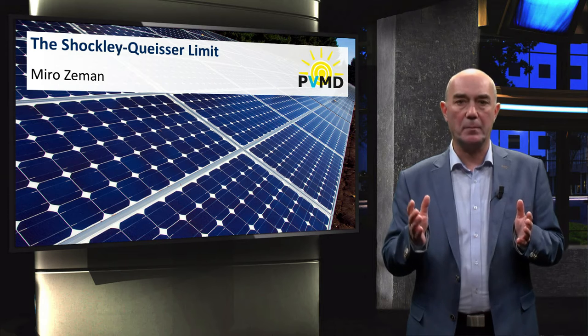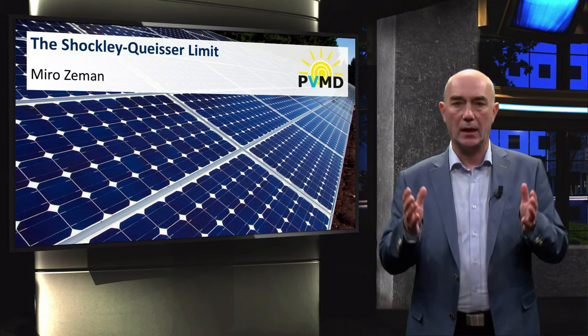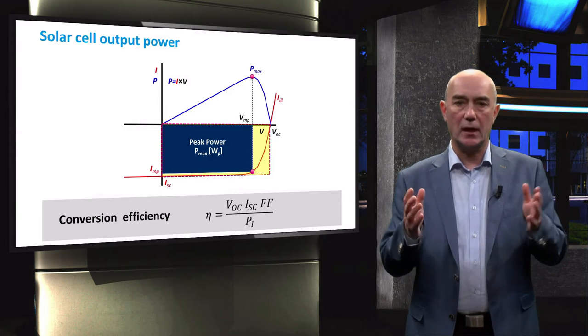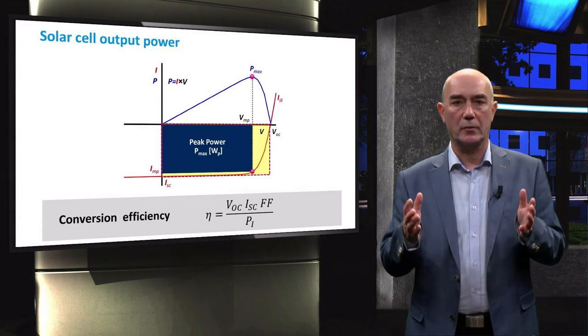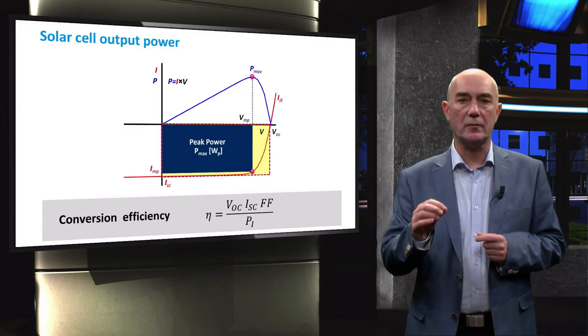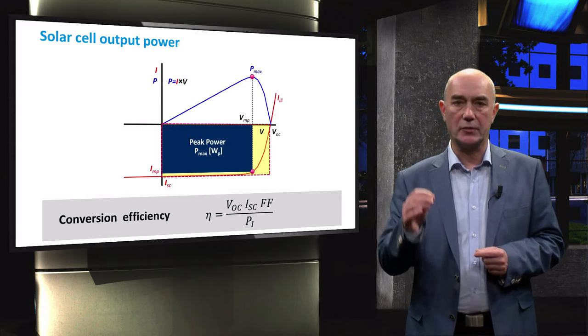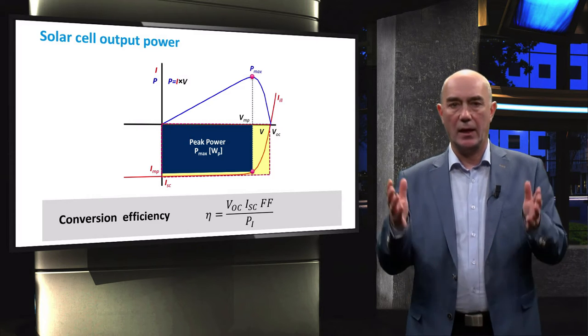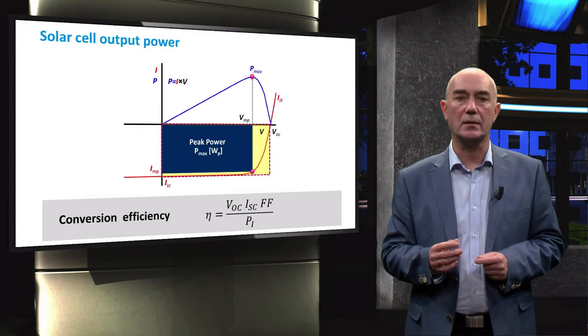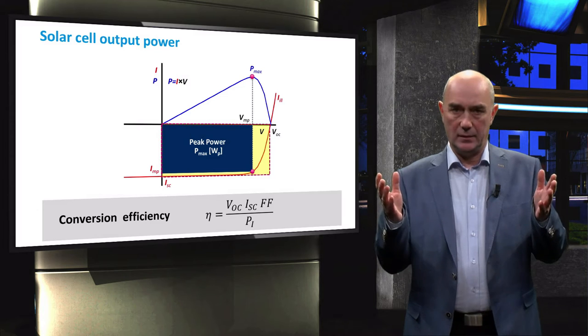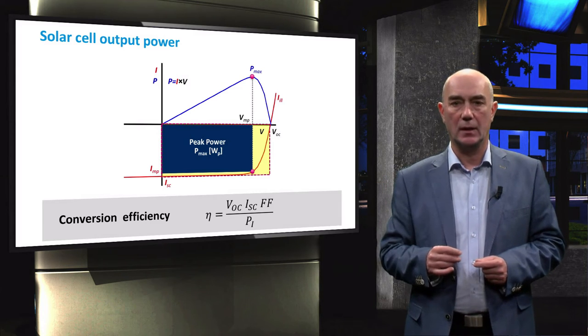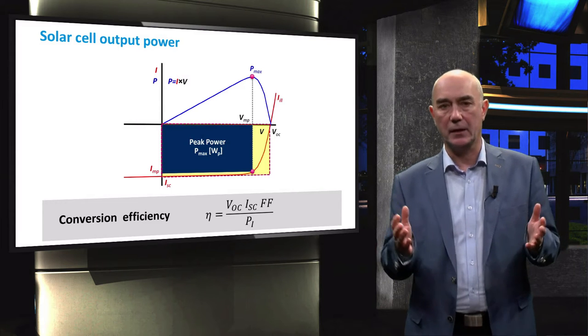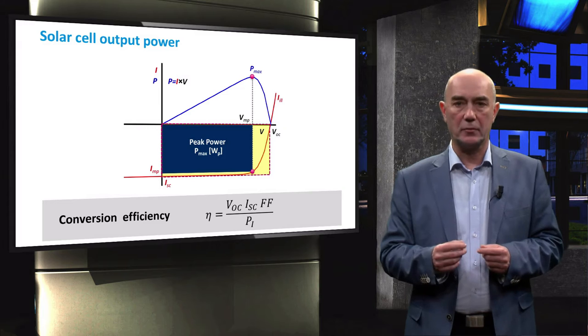Knowing the Shockley-Queisser limit will help us to understand which material bandgaps are good candidates for designing high-efficiency solar cells. Here you see our familiar current voltage and power voltage curves for a solar cell. You should know by now that the efficiency of a solar cell can be calculated as the product of the open circuit voltage, the short circuit current and the fill factor divided by the incident power. The incident power does not depend on a solar cell. However, what are the limits of the external solar cell parameters? Let's go through them one by one.